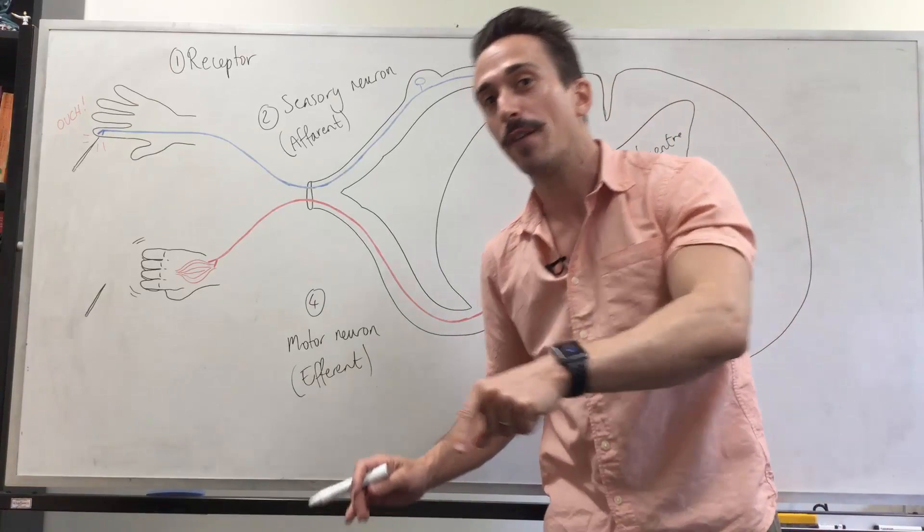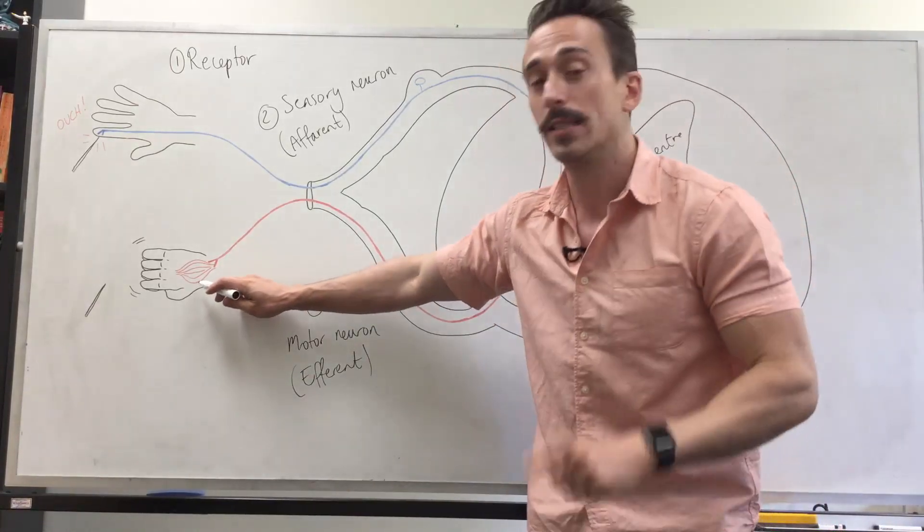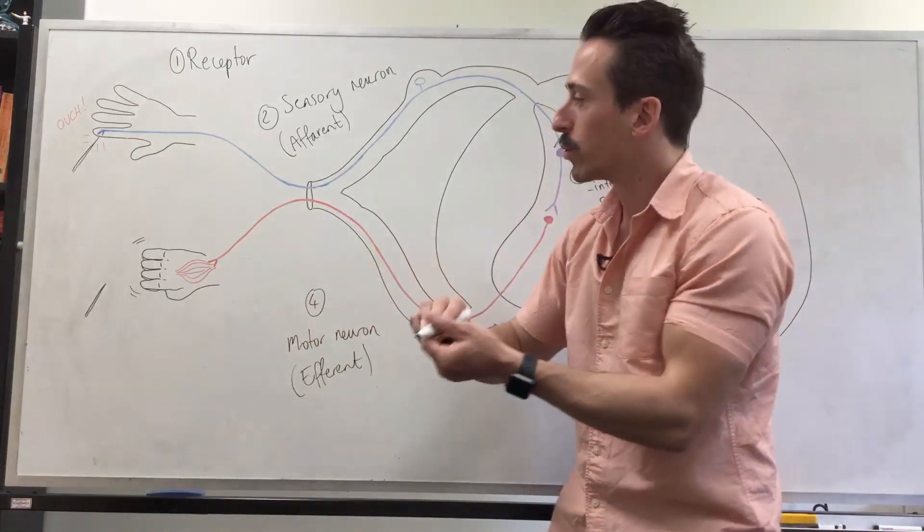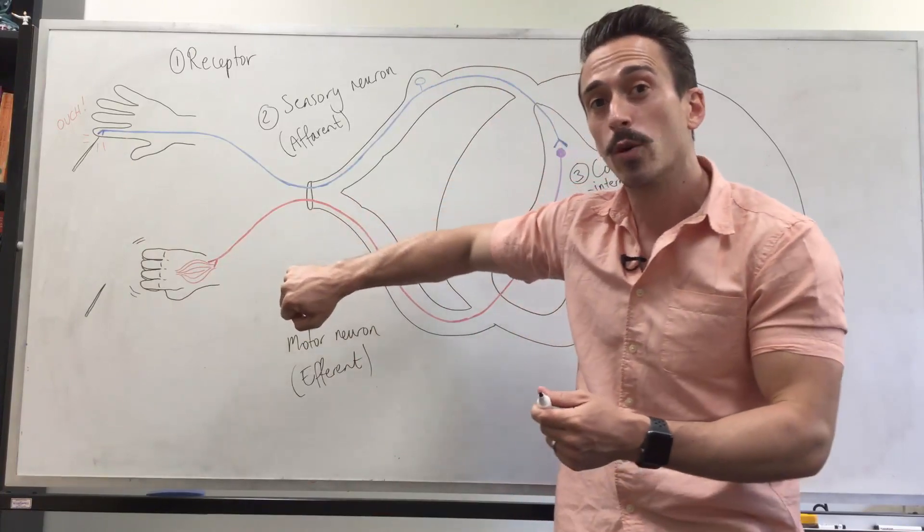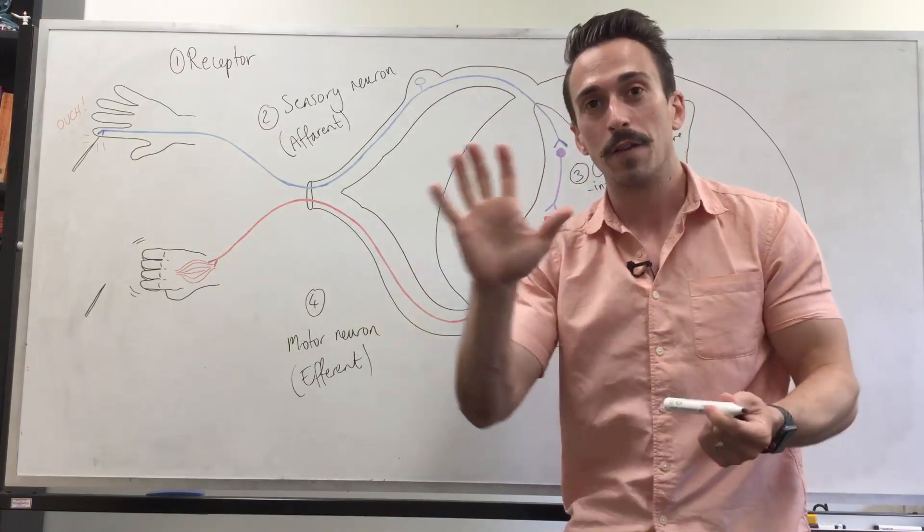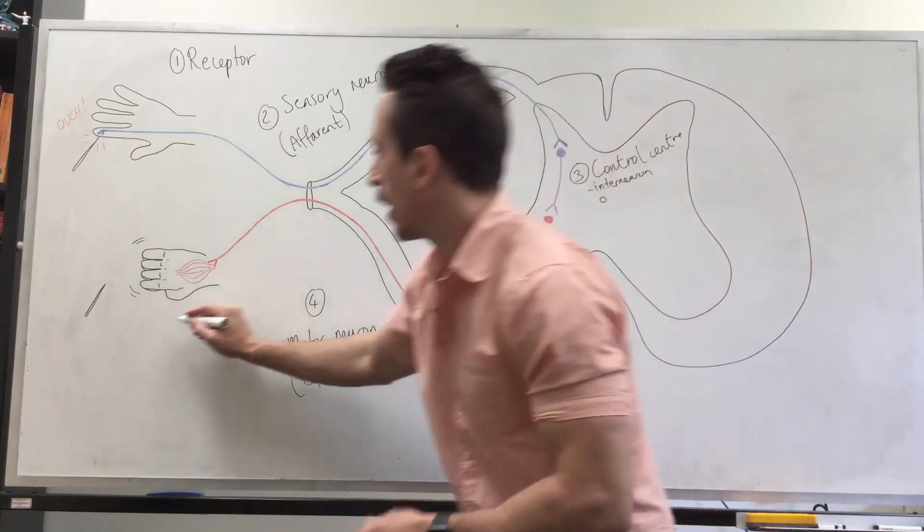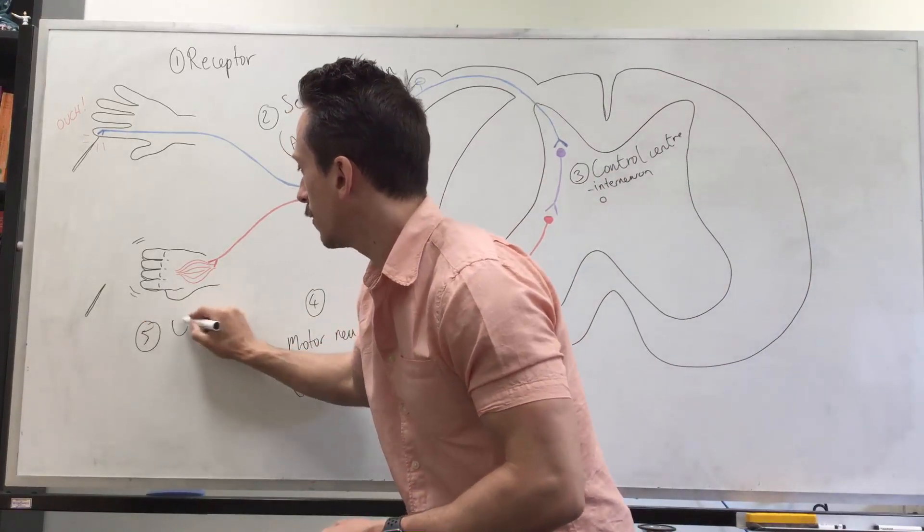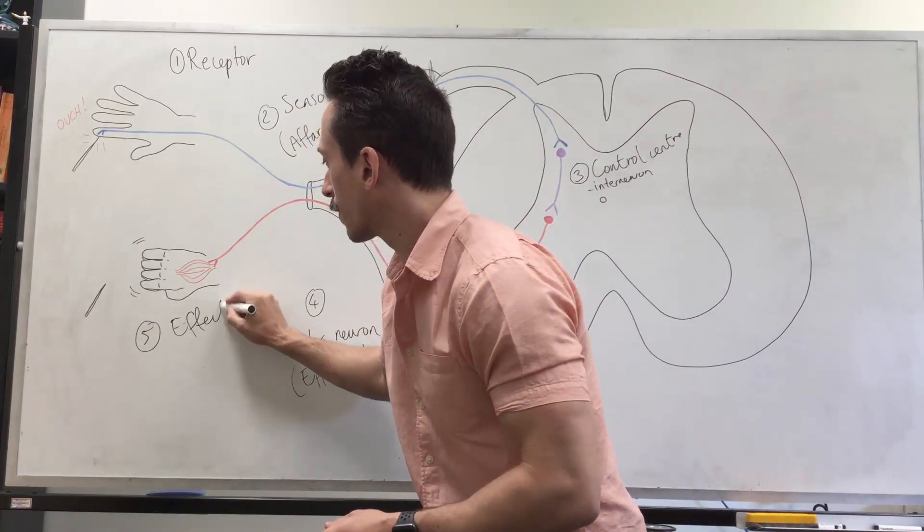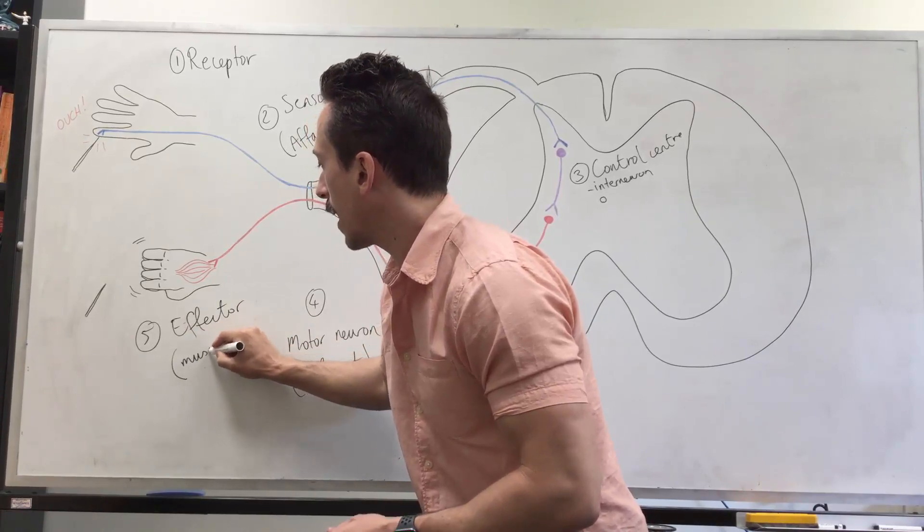Efferent goes to the effector, and in this case the effector is the muscle of the hand which will contract and move that hand away from the stimulus. That's the fifth step, the effector. In this case the effector is going to be the muscle of the hand.